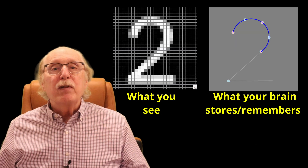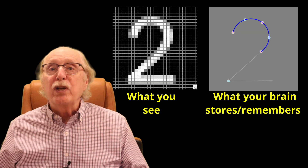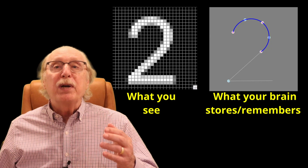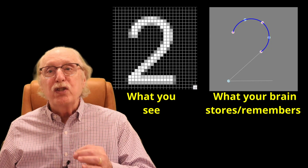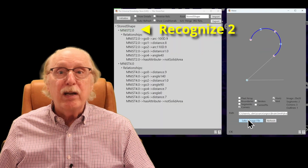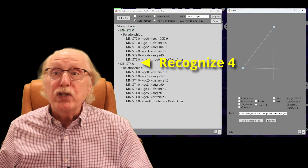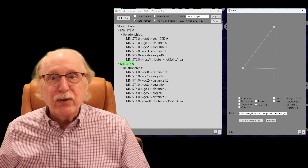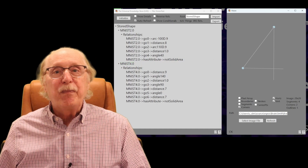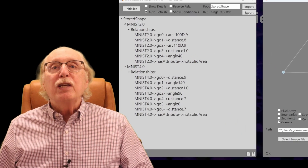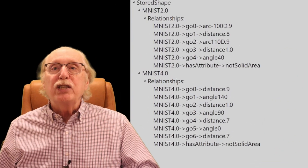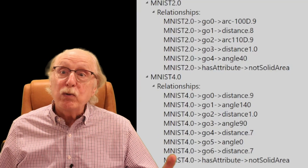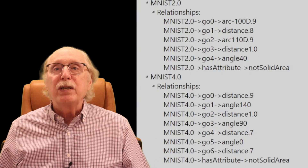Given that features are attributes of a graph node, the comparison process is one of comparing the similarity of the feature set, not comparing the underlying image pixels at all. This representation is inherently scale, position, and rotation independent.